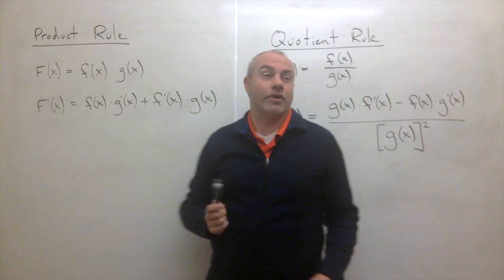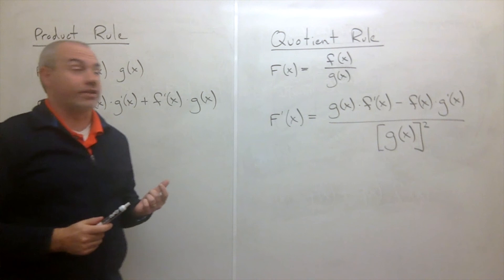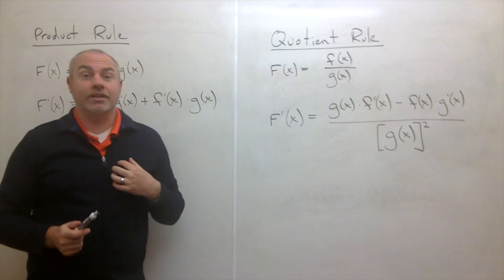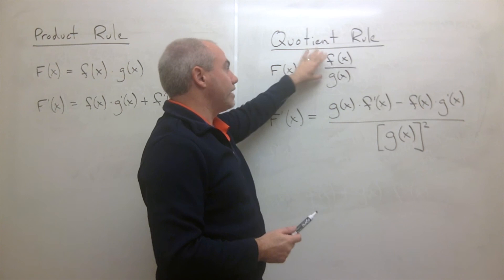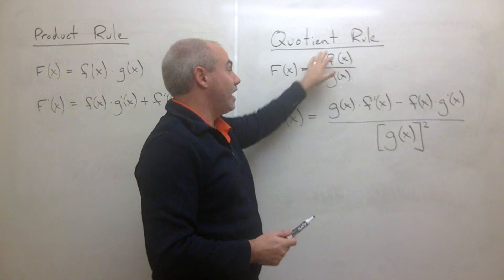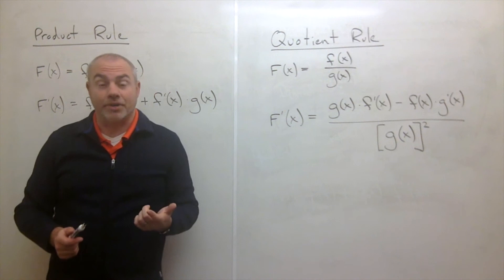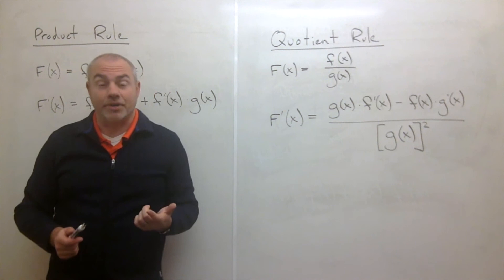One thing to notice: for the product rule, it doesn't matter which function you differentiate first since you can flip-flop the two terms. With the quotient rule, it actually matters — you must take the derivative of the top first. My personal trick: whenever I use the quotient rule, I always write down the bottom first, then remember to take the derivative of the top. Just remember the bottom gets written down first just as it is. Now let's do some examples and see how this works.